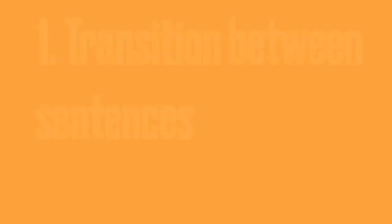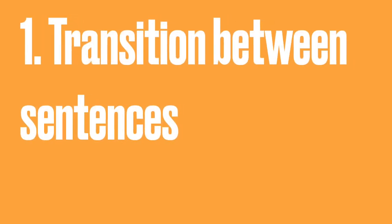There are different types of transitions. The first one is transition within a paragraph — this means connecting all the sentences of your paragraph together. A reader, when reading one sentence, should be able to anticipate what he's about to read next. He shouldn't be like, 'Oh, where did this come from?'